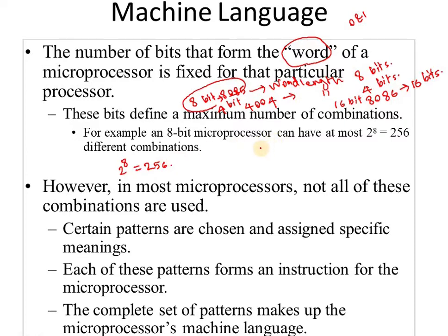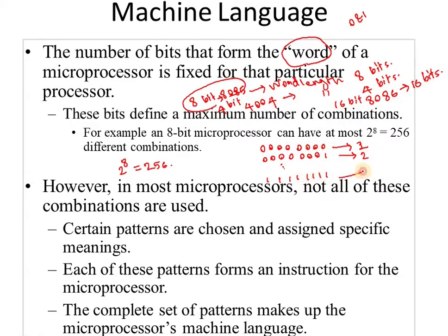The first combination is 00000000, the second combination is 00000001, and so on. The last combination is 11111111. So the first combination has decimal equivalent 0, and the last has decimal equivalent 255.